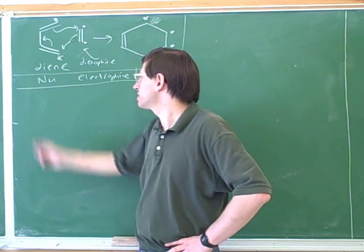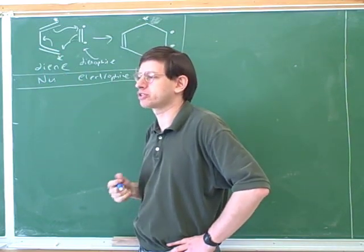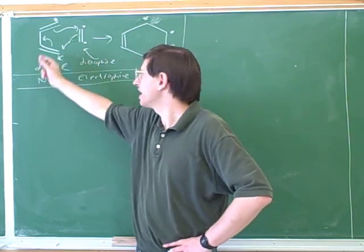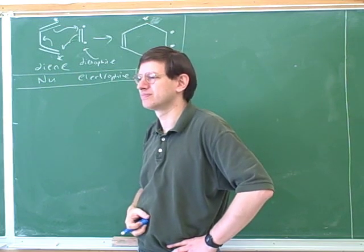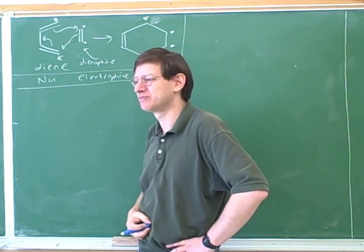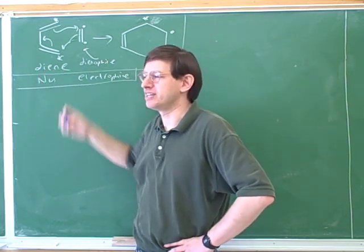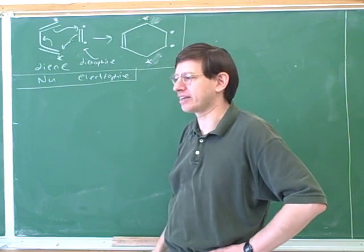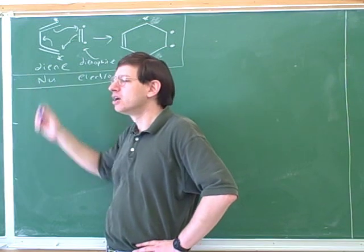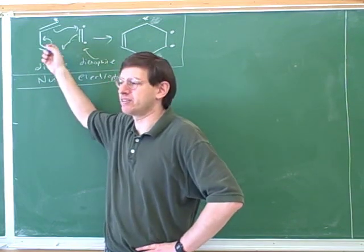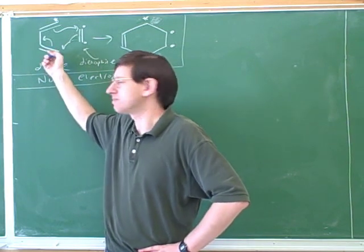What types of substituents would we want to add to the diene to make this work better — electron-donating or electron-withdrawing substituents? Electron-donating. Why donating? Because you want it to be more electron-rich, to be a nucleophile. It's the electron richness of the diene that makes it act like a nucleophile, but it's still not really reactive enough. To make it more reactive, we have to add more electron-donating substituents.